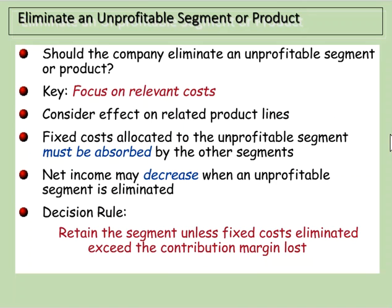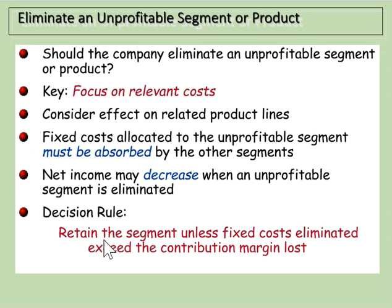We have to make sure that the fixed costs allocated to the unprofitable segment are going to be absorbed by our other segments. If not, our net income might actually go down even if we eliminate an unprofitable segment. The decision rule is to retain the segment unless fixed costs eliminated exceed the contribution margin loss.